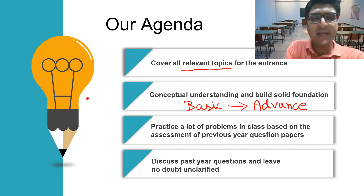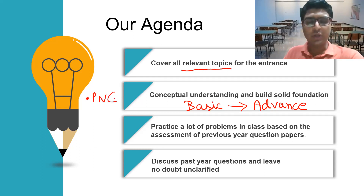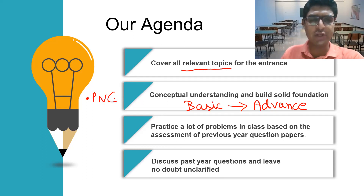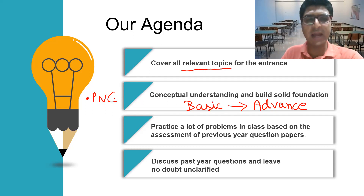The basic prerequisite I would require is that you should know basic permutation and combination. Class 11th or 12th level basic probability and basic permutation and combination — if you are aware of those, even if you don't remember every detail, that would be enough.